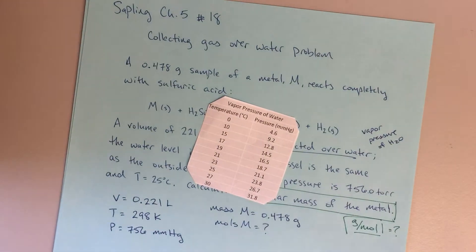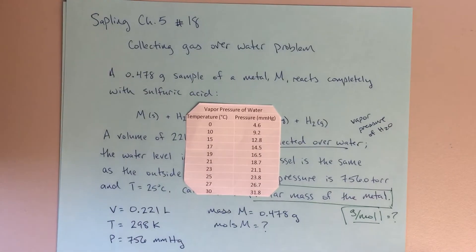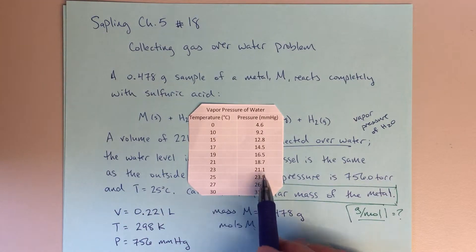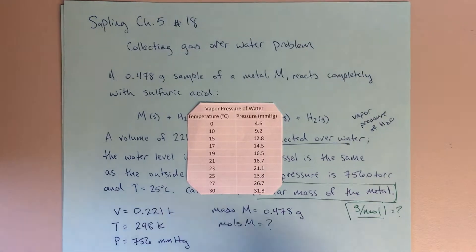And I'm going to use this table, right? So I've cut this out, my vapor pressure of water table. So at 25 degrees Celsius, the vapor pressure due to water is 23.8 millimeters of mercury.